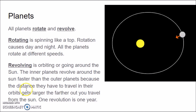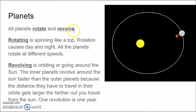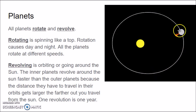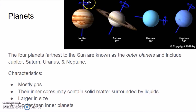All planets both rotate and revolve. Rotating is spinning like a top — rotation causes our day and night, and all planets rotate at different speeds. The arrows in a diagram show how a planet rotates on its imaginary axis while orbiting around the Sun. Revolving is a fancy word for orbiting — they are going around the Sun. The inner planets revolve around the Sun faster than the outer planets because the distance they have to travel in their orbits gets larger the farther out you go from the Sun.